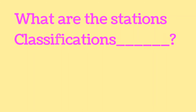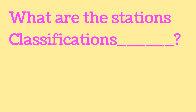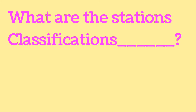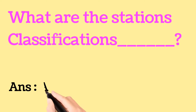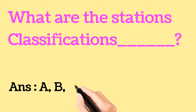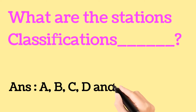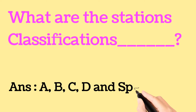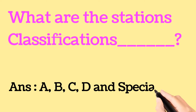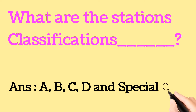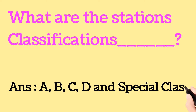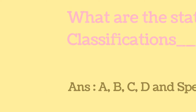Next question: What are the station classifications? The answer is: A class station, B class station, C class station, D class station, and Special class station. Those which do not fall in A, B, C, or D class come under Special class station.